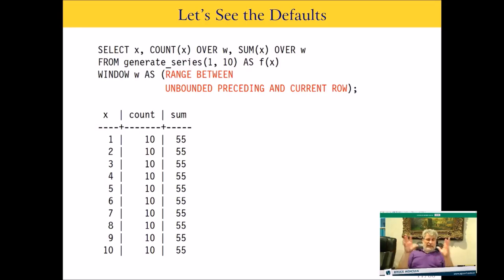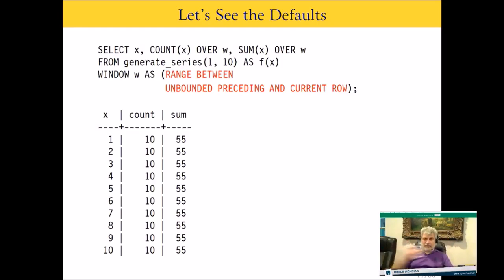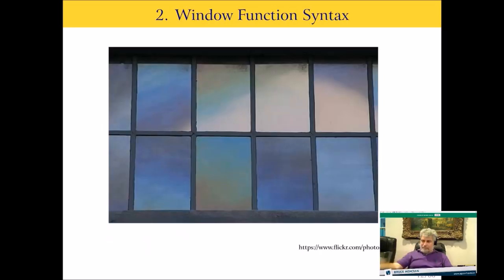Here is our first real look at the default window function behavior. I've taken the empty parentheses and put the default value in there: RANGE BETWEEN UNBOUNDED PRECEDING AND CURRENT ROW. That's the default for a window function. We're going to go over the meaning of every single one of these keywords.